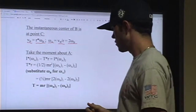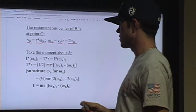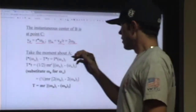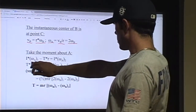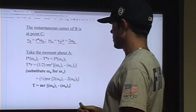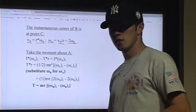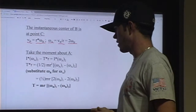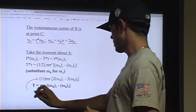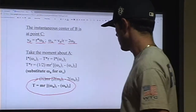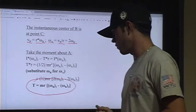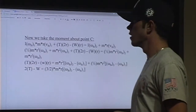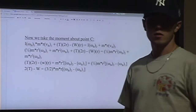So what we need to do is find the equation for tension. To do that, we take the moment of A using the kinetic diagram. That implies that the moment of inertia times the angular velocity of A in the first state, minus the tension times the radius, equals the moment of inertia times the angular velocity of A in the second state. The final equation for tension is mass times the radius, multiplied by the angular velocity of B in the first state minus the angular velocity of B in the second state.